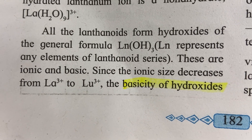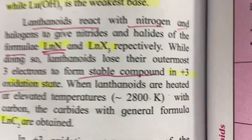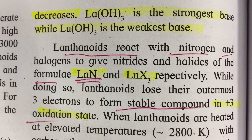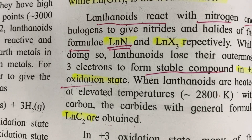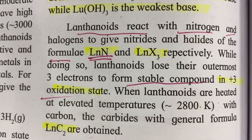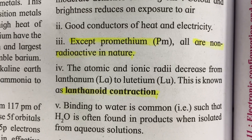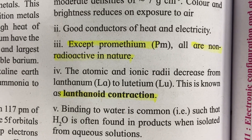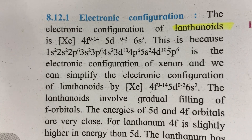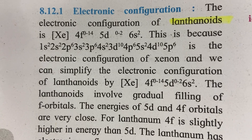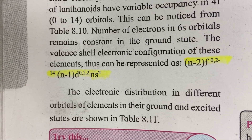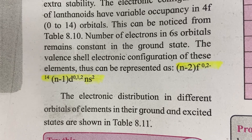Hydroxides of lanthanoids: the basicity of hydroxides decreases across the series. La(OH)₃ is the strongest base while Lu(OH)₃ is the weakest base. Lanthanoids react with nitrogen and halogens to give nitrides (LnN) and halides (LnX₃). Except for prometheum (Pm), all lanthanoids are non-radioactive in nature. The electronic configuration of lanthanoids is (n-2)f⁰⁻¹⁴ (n-1)d⁰⁻¹ ns².